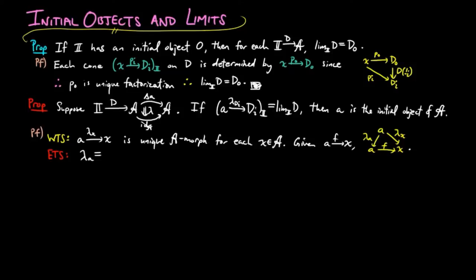Therefore, it is enough to show lambda a is equal to the identity of a. Then again, since lambda is a cone on the identity, lambda di is equal to lambda di lambda a, or lambda di identity a is equal to lambda di lambda a for each object i in the category i.